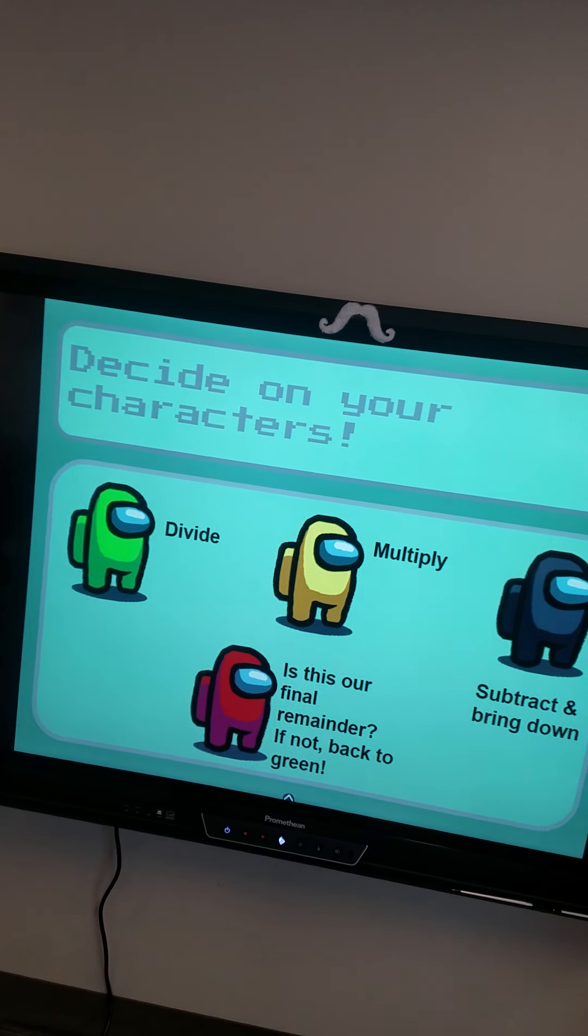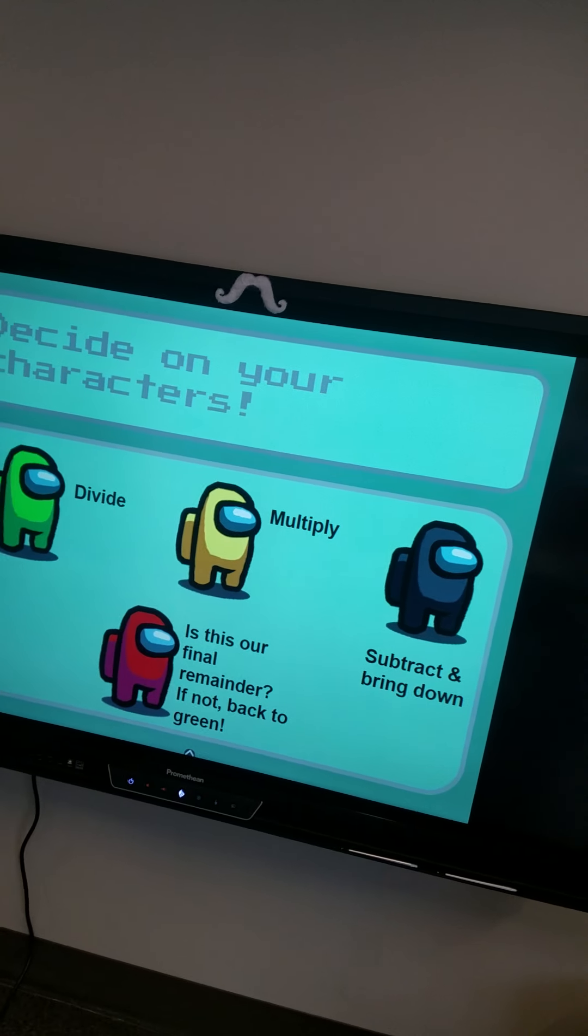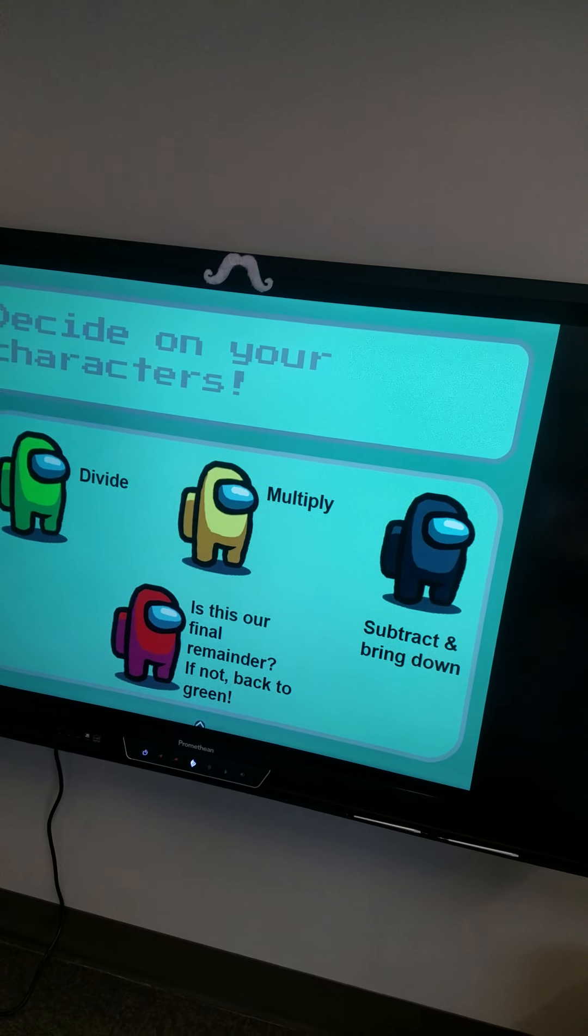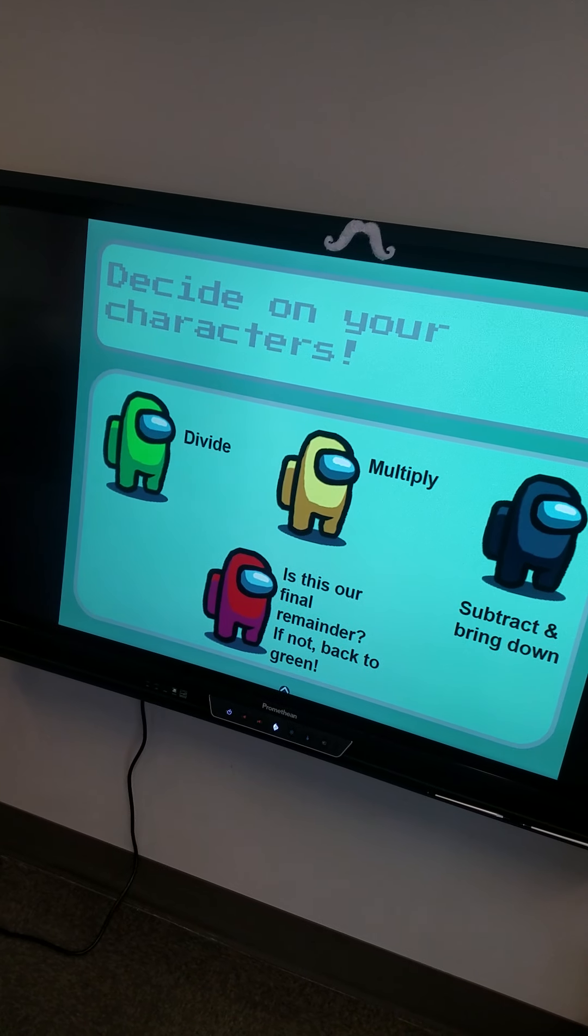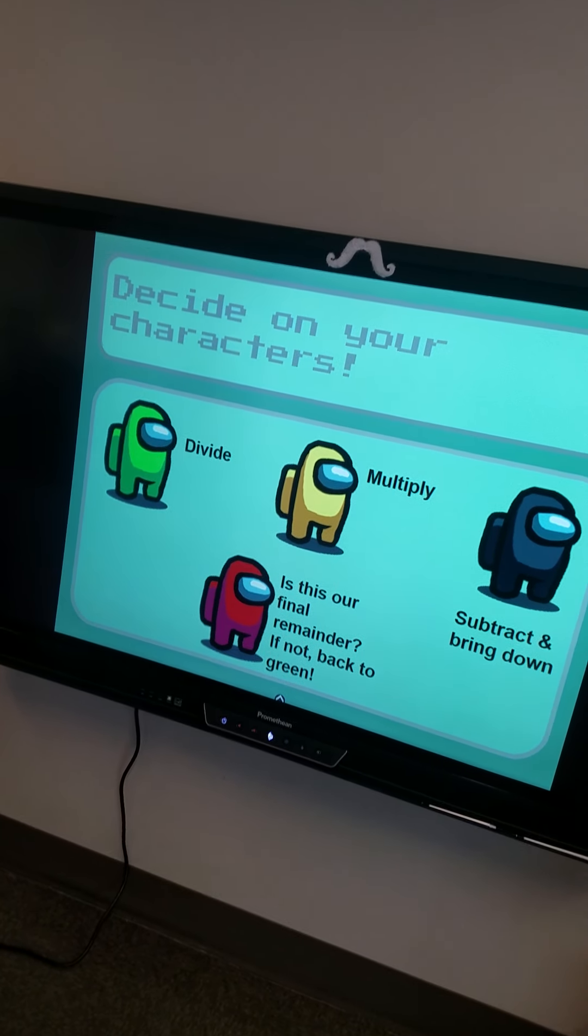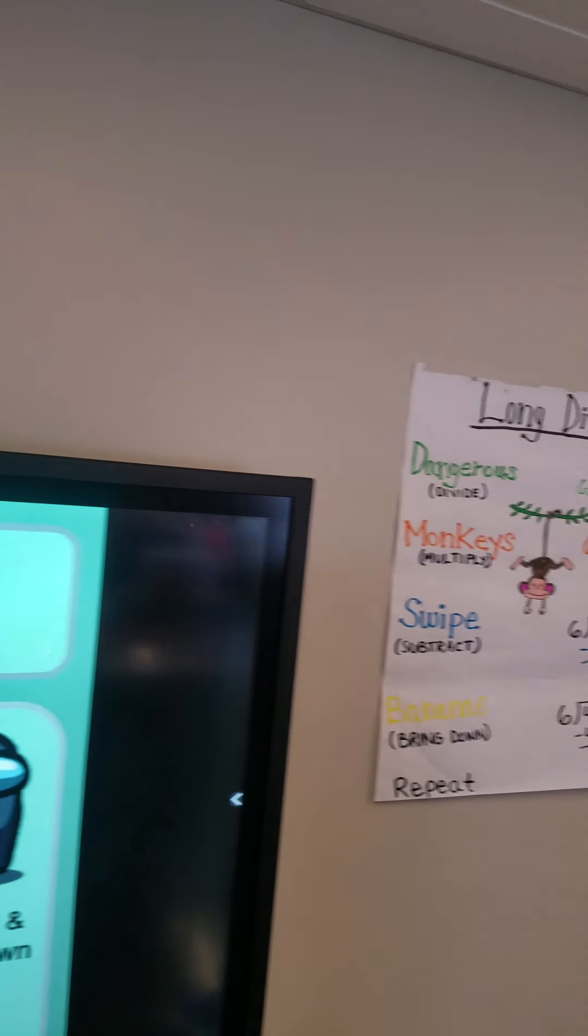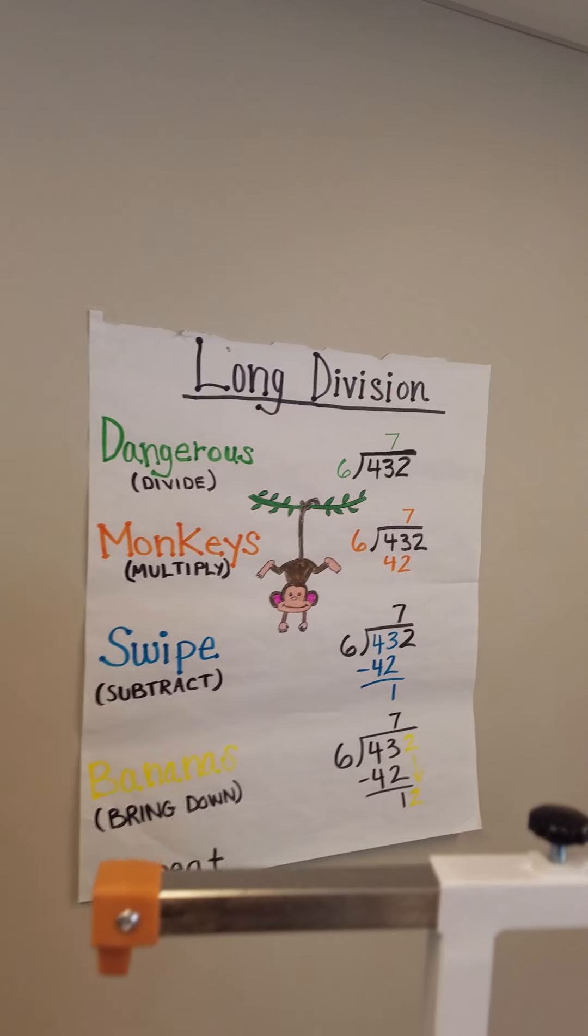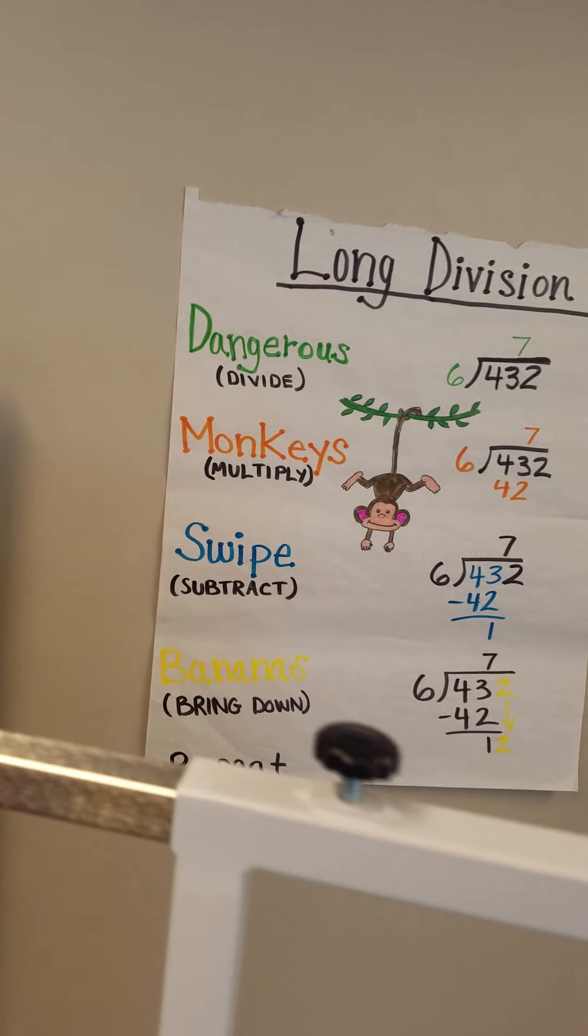If you're green you're going to divide, if you're yellow you're going to multiply, black will subtract and bring down, and then red is going to ask is this our final remainder. If it's not they're going to kick it back to green. These are all the steps of long division that we know. You're each going to be responsible for a different step.